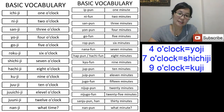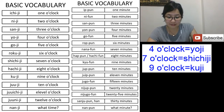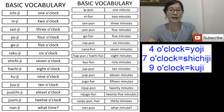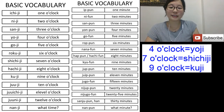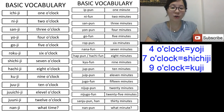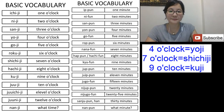'Nanji' — 'nan' means 'what' and 'ji' means o'clock, so 'nanji' means 'what time'. It's a question word.